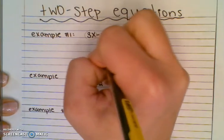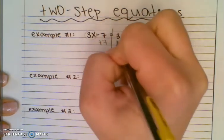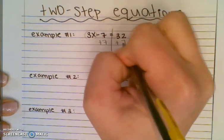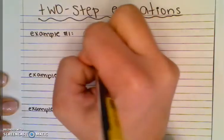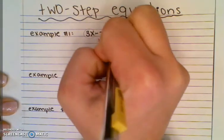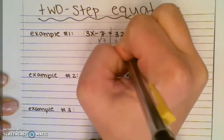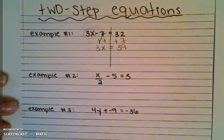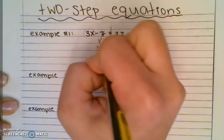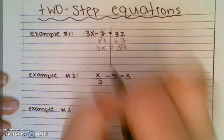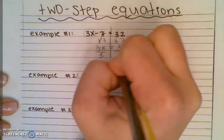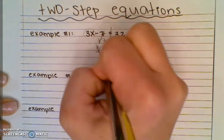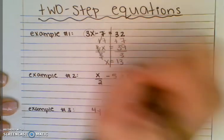The opposite of minus 7 is plus 7, so that goes away. Then you have 3x equals 39. Remember, the 3 is being multiplied by the x, and the opposite is division. So x equals 13.